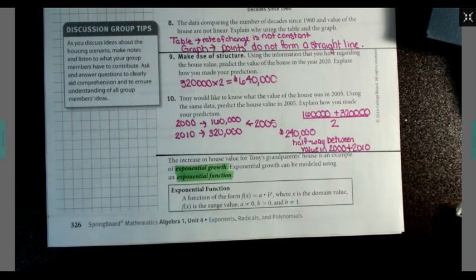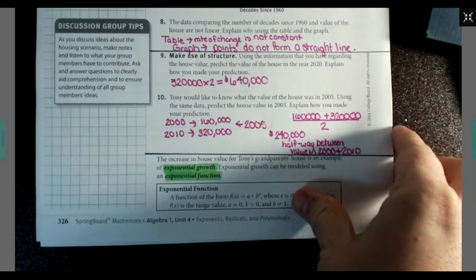Exponential function is a function of the form f(x) = a times b to the x power, where x is the domain value, f(x) is the range value, a cannot equal 0, b must be greater than 0, and b cannot equal 1.